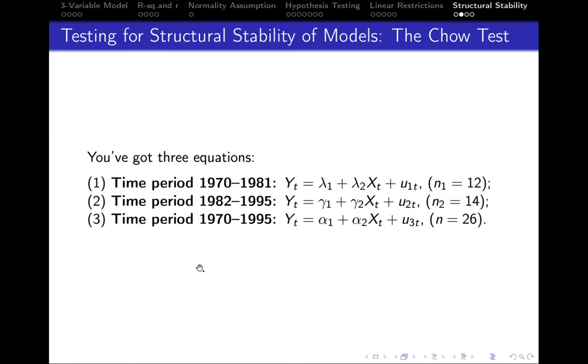We also have the third sample, which is our entire sample from 1970 till 1995. So 12 plus 14, this is 26 observations.